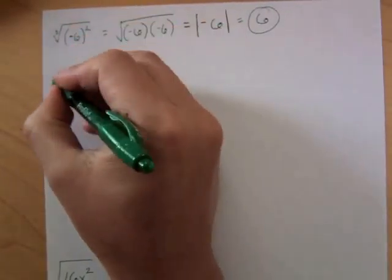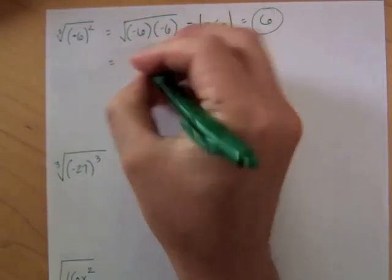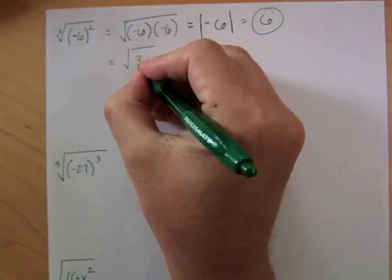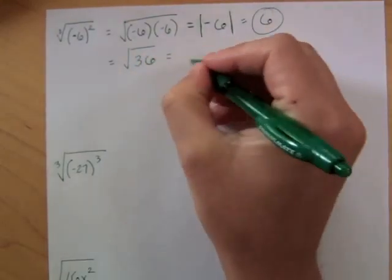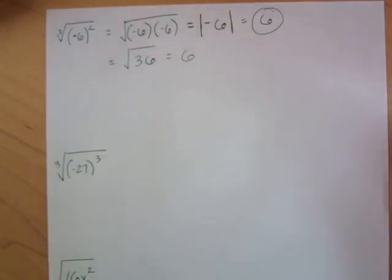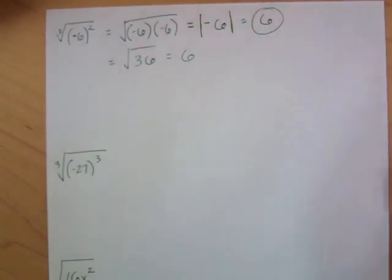Another way to think about this: negative 6 times negative 6 is positive 36, and the square root of positive 36 is not negative 6, it's 6. We'll discuss some exceptions later where a negative answer is okay, but for now, if the index is even, your answer has to be positive, and we use absolute value marks to indicate that.